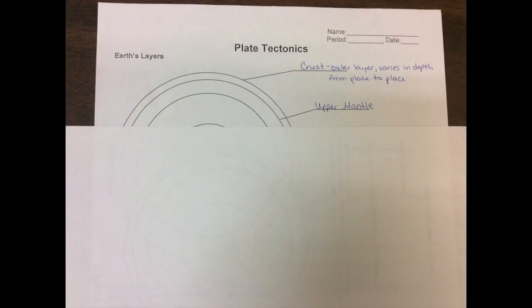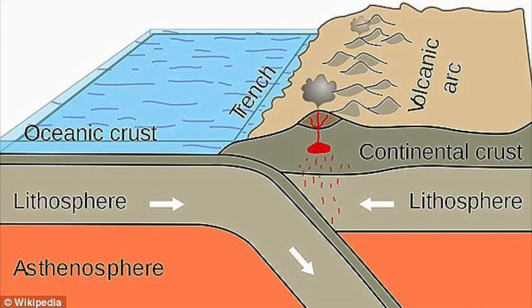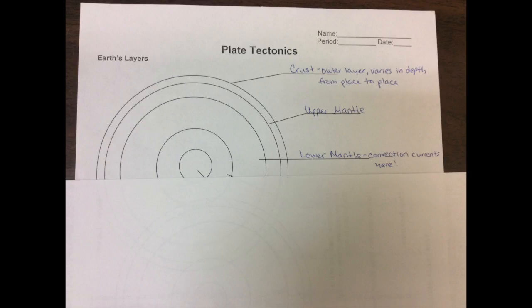Then we have the upper mantle. The upper mantle plus the crust is what we call the lithosphere. And then below that we have the lower mantle.